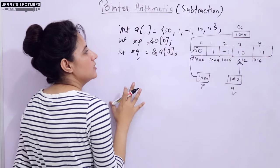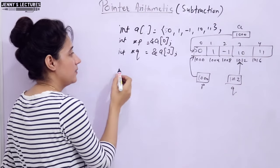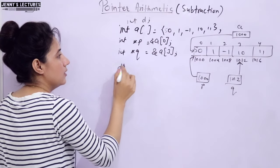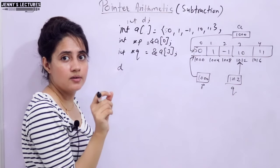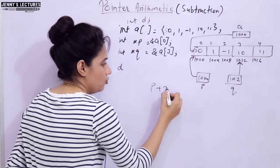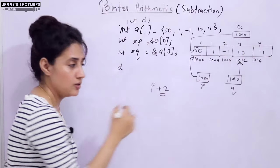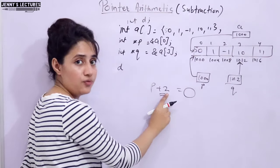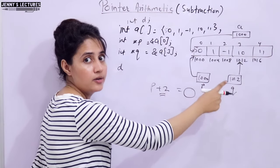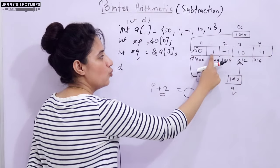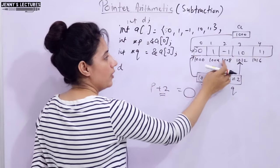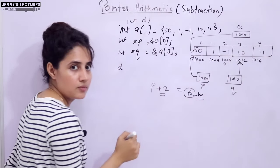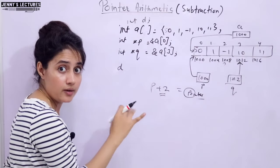If you want to find the difference of P and Q, you take a variable D declared as int. The difference you will get is an integer value. If you do P plus 2 — in case of addition — the result you get is in the form of a pointer or address. For example, P is 1000 plus 2 means you move the pointer forward by two elements, giving 1008 — that is an address.